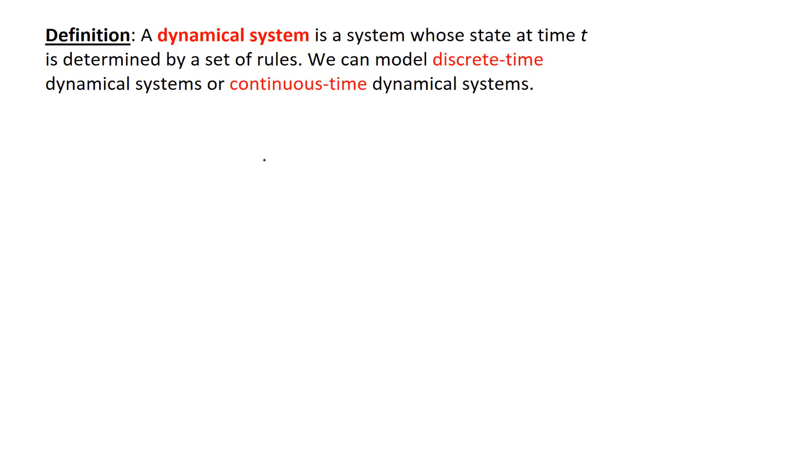Hello, in this video we're going to talk about dynamical systems. A dynamical system is a system whose state at time t is determined by a set of rules. We can model discrete-time dynamical systems or continuous-time dynamical systems.